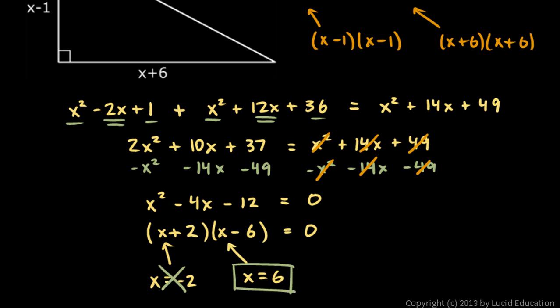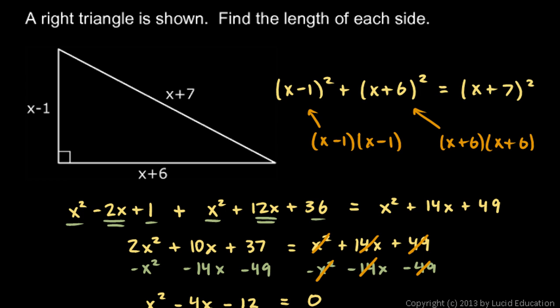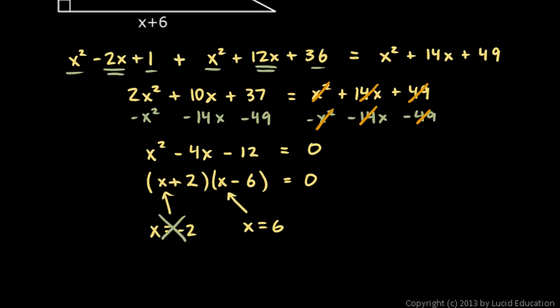x equals 6 is the answer that we want. But that isn't the answer to the question. That's just our answer for x. That's our value for x. The question is asking us, find the length of each side. And so now that we know x is 6, we can know x minus 1 is going to be 5. x plus 6 is 12. And x plus 7 is 13. So those are the lengths of the sides. So let's write that down as our answer to the problem.